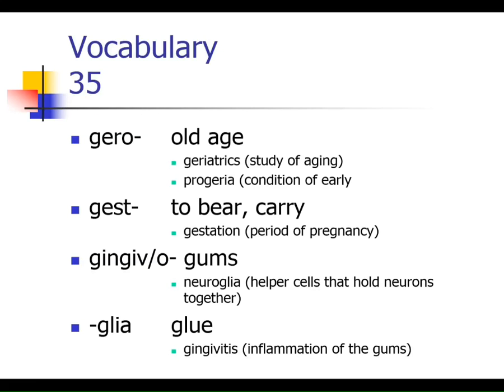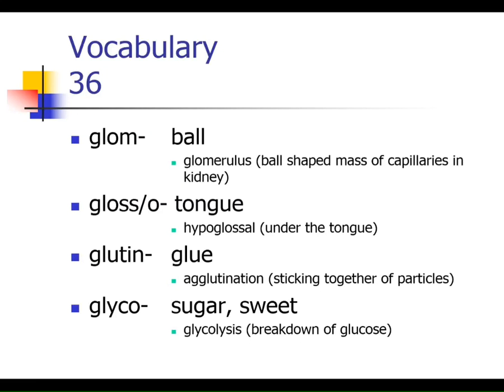Finishing up today: 'glom' — when we get to the kidney, we'll see the glomerulus, a ball of capillaries within the kidney. 'Glosso' means the tongue; hypoglossal means under the tongue, as in medicine that dissolves under the tongue. 'Gluten' means glue — it's what holds our bread products together. And 'glyco' means sweet or sugary. Glycolysis: lysis means the breakdown of sugar. That completes our vocabulary.